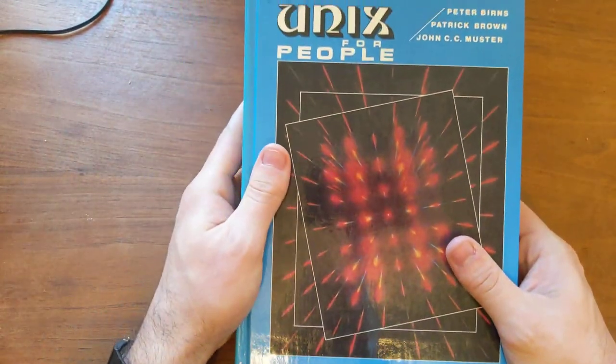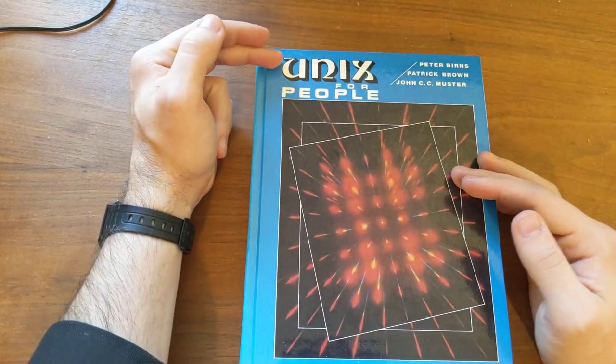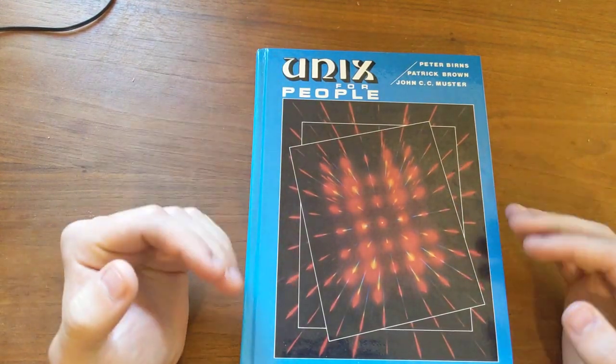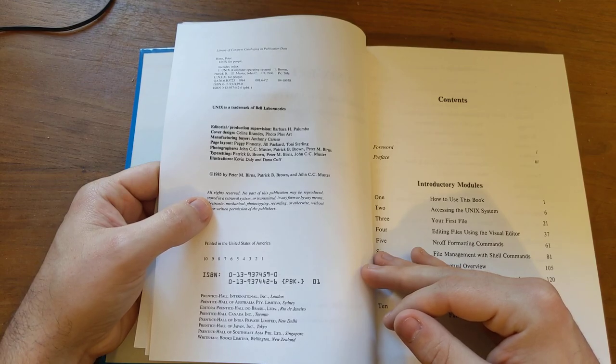Now, I found something very fascinating that I think many of you will be interested in, and it is this book, Unix for People. This is actually a very old book. I want to say it was made back in the 80s. I think it was 84.